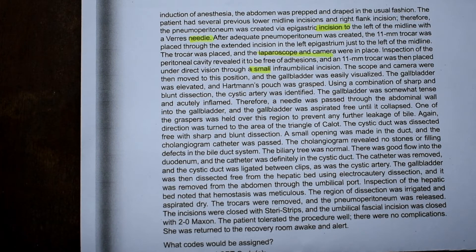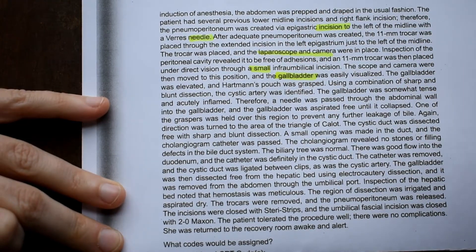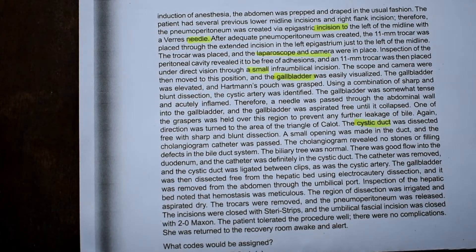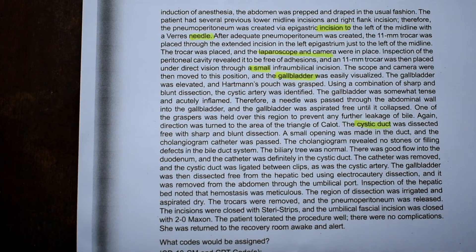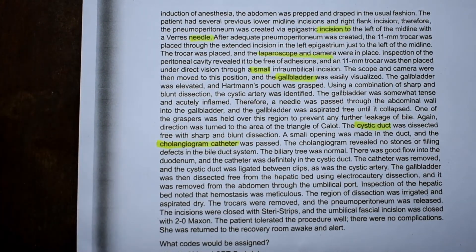One of the graspers was held over the region to prevent any further leakage of bile. Attention was turned to the area of the triangle of Calot. The cystic duct was dissected free with sharp and blunt dissection. I'm going to highlight gallbladder because we know that's one body part they're working on, and then also cystic duct — also they are working on it. A small opening was made in the duct and the cholangiogram catheter was passed. The cholangiogram revealed no stones or filling defects in the bile duct system.